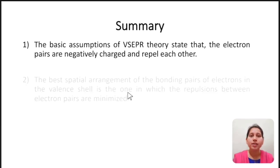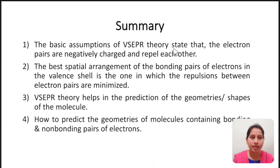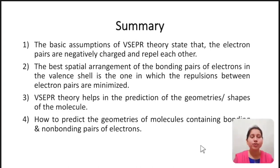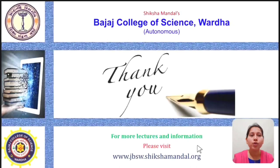In summary: the basic assumptions of VSEPR theory state that electron pairs are negatively charged and repel each other. The best spatial arrangement of bonding pairs in the valence shell is the one in which repulsions between electron pairs are minimized. VSEPR theory helps in the prediction of geometries and shapes of molecules, and we have seen how to predict geometries of molecules containing both bonding and non-bonding pairs of electrons. Thank you so much for watching this lecture. For more online lectures and information, please visit the college website.